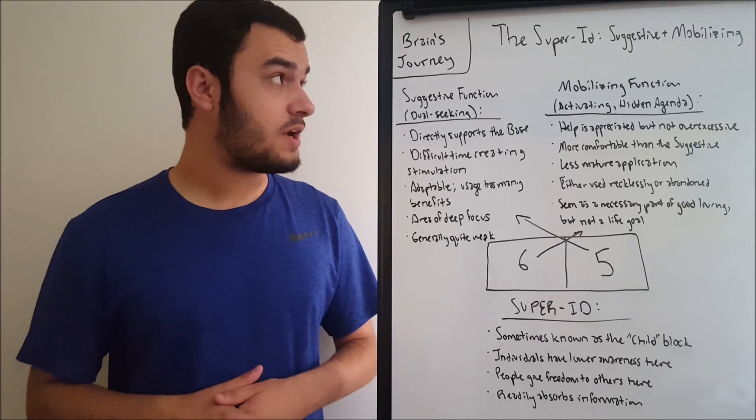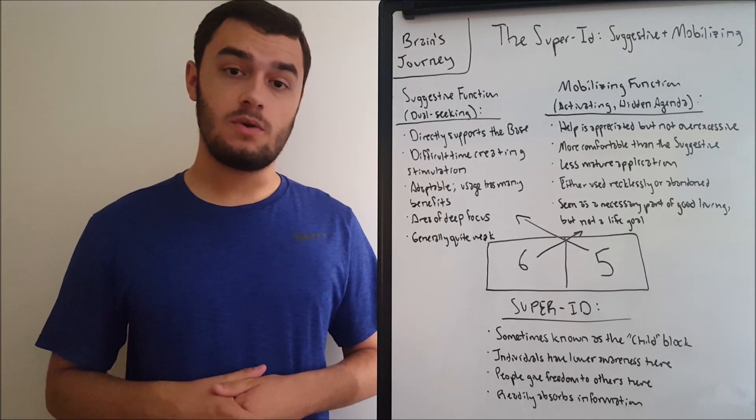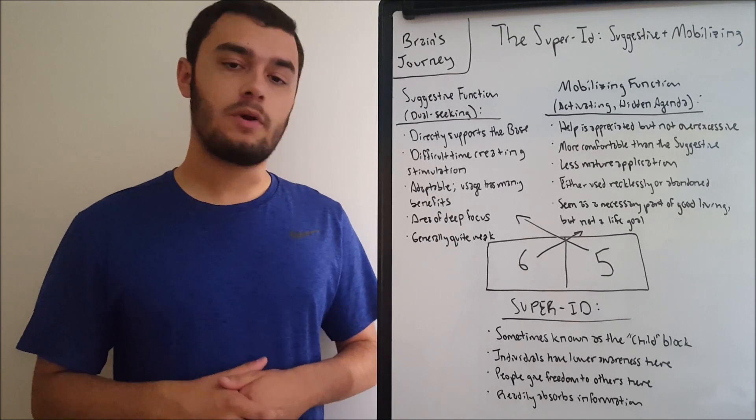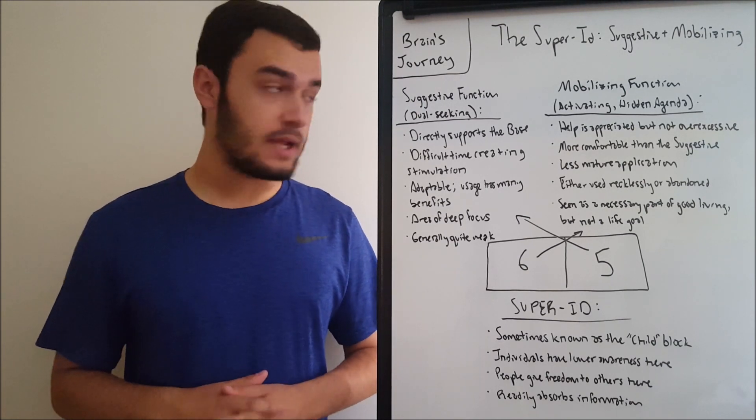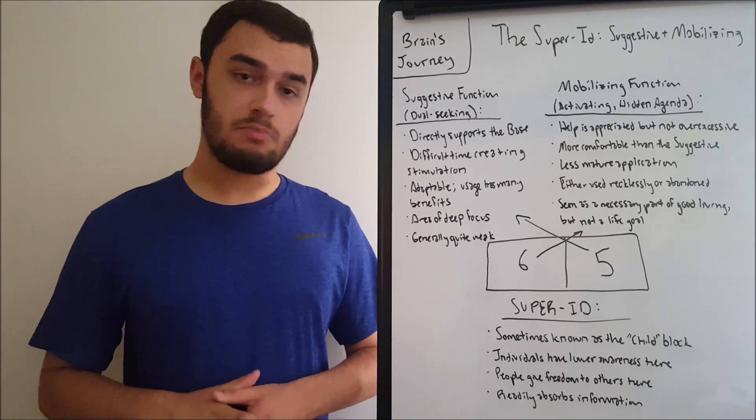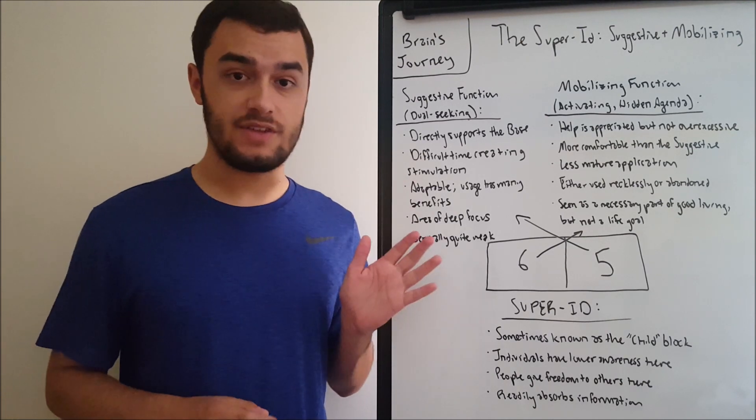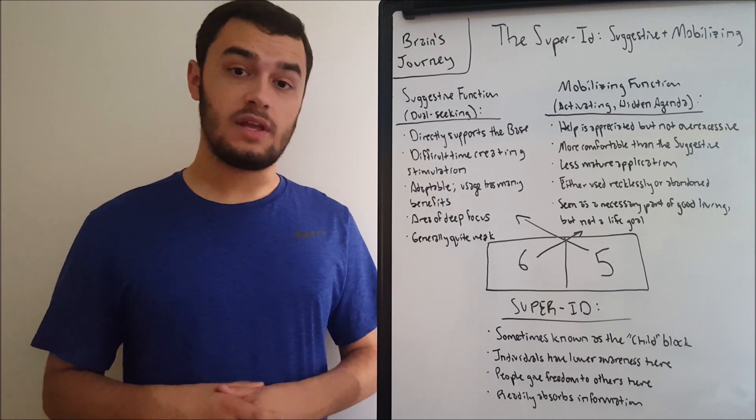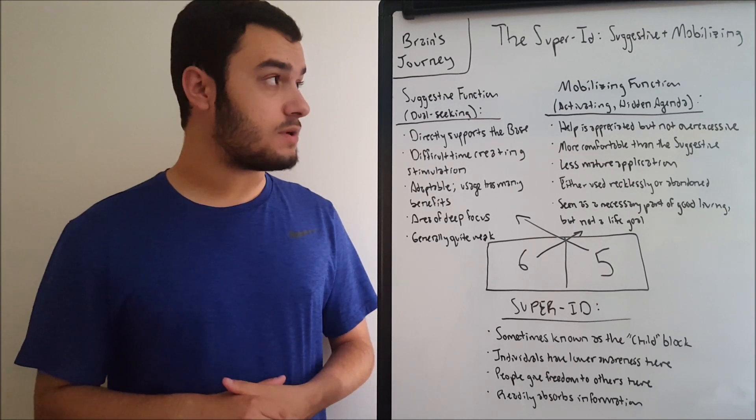Hello everyone, this is Brain's Journey, and welcome back to another video in our function series. Today we're going to be taking a look at the third blocking, the Super-Id, which is composed of the suggestive and mobilizing functions. I don't really have anything to say at the beginning, so without further ado, let's get into it.